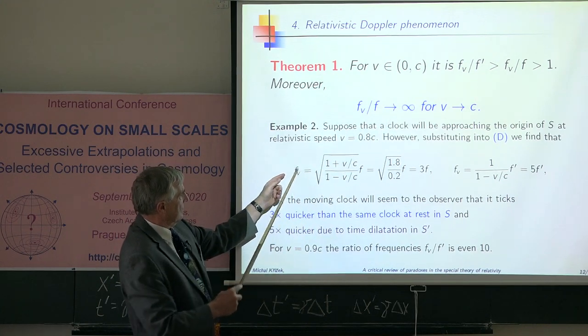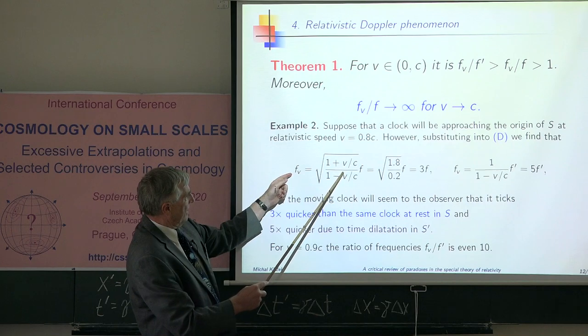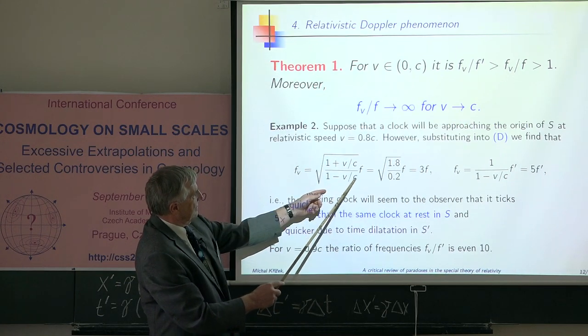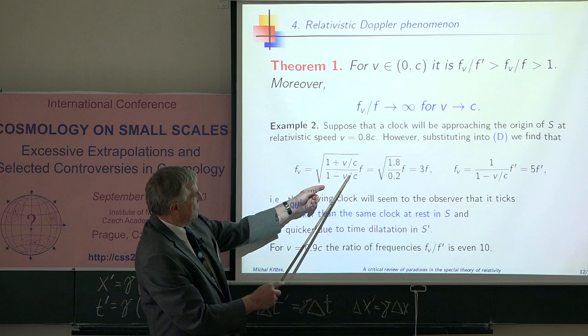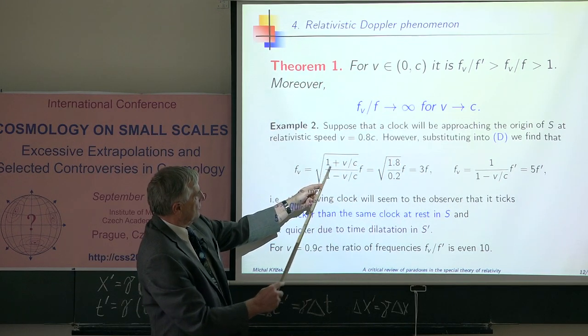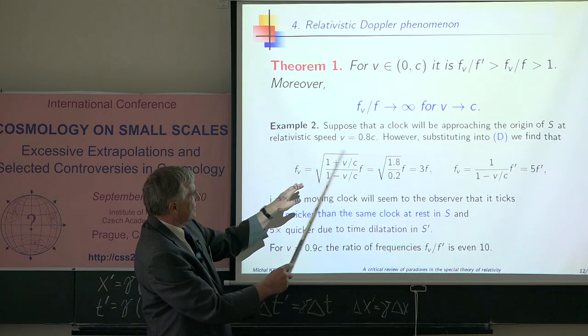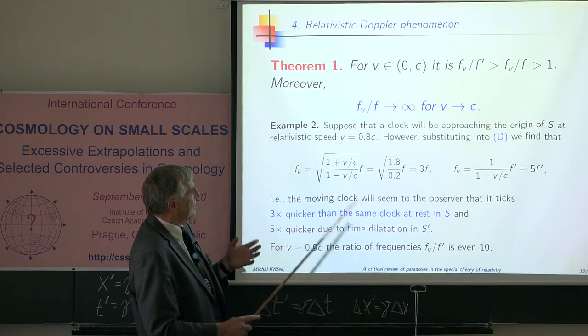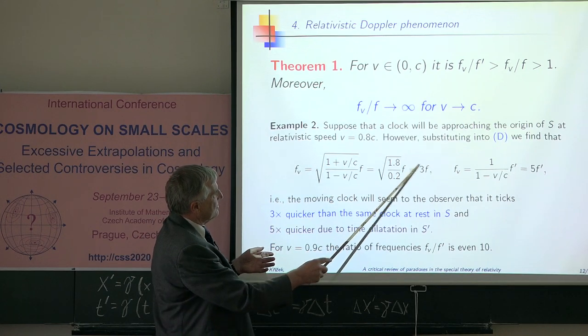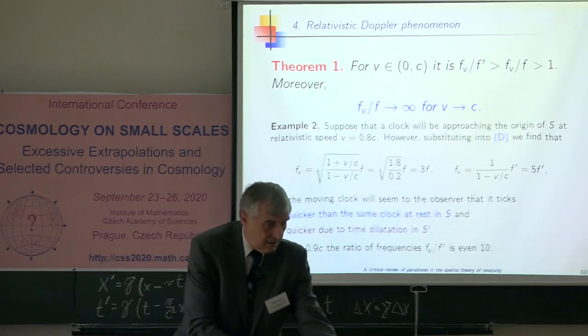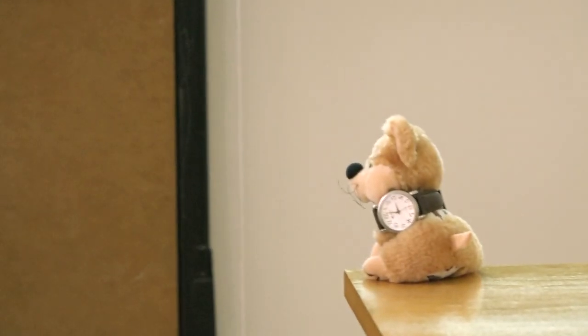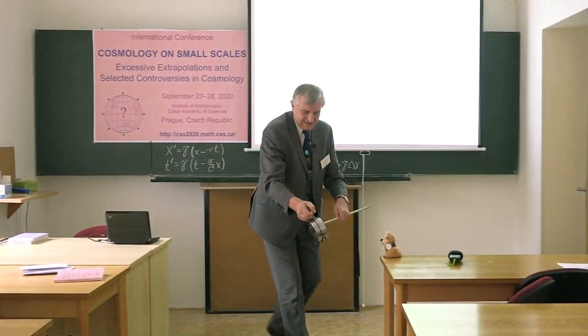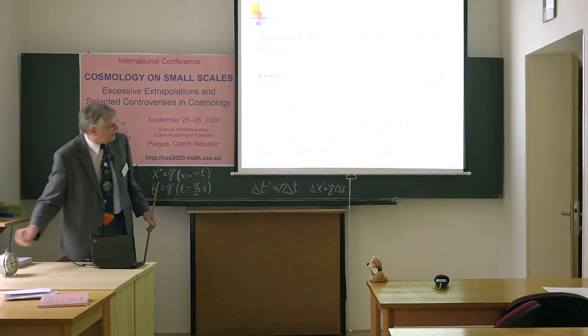It is very easy to prove this theorem. If you substitute to this Doppler formula, then if v tends to c, then here this tends to one. And one minus one is zero. Here in the numerator you have two, and here in limit you have zero. So you see that this f is much bigger than that. For our concrete data, you see that this observer will see three times higher frequency than this clock has. He will see three times quicker tick of this clock.